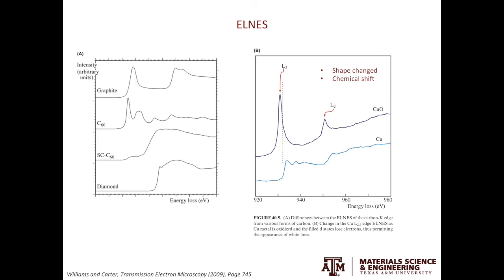Coming back to the two sharp edges seen from copper oxide — they are widely observed in transition metals and are called white lines. White lines correspond to the energy levels of the L edges, and you will see them when the element has unfilled d orbitals. Because metallic copper has filled d orbitals, that's why we don't see these white lines. For copper oxide, the d orbital electrons are grabbed by the oxygen ion and become available, which is why we can see the copper white lines.